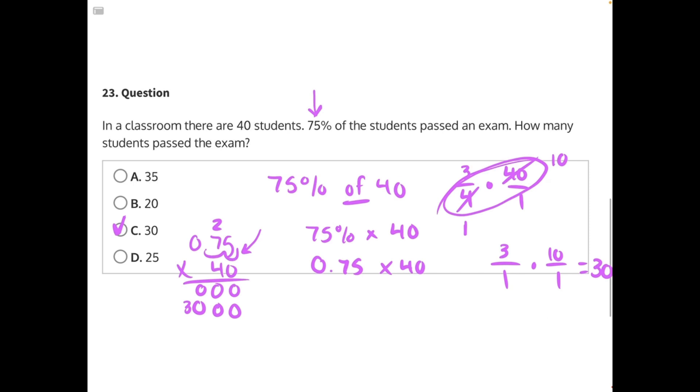Two places on the decimal point. Two places on the decimal point would put you right here, and you would have gotten 30, which is also answer choice C.